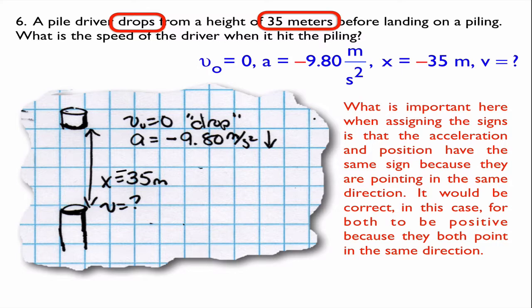Notice that the acceleration and the distance it travels are both negative. What's important is not necessarily that they're both negative, but that they're both the same sign. The acceleration and distance can both be positive, or both be negative — that's just because they're both pointing downwards in this problem.